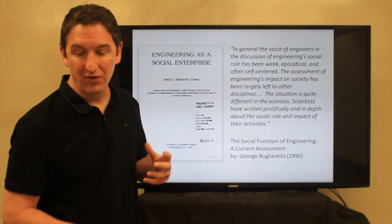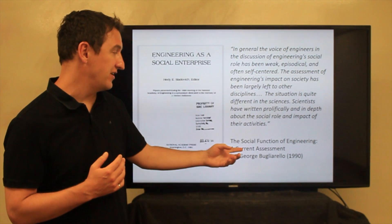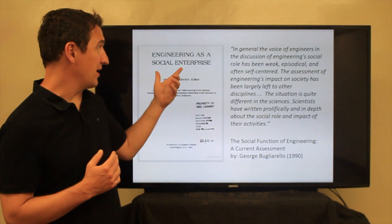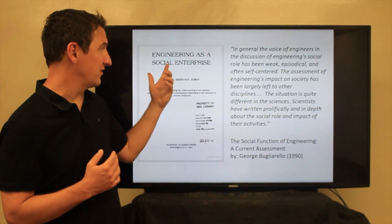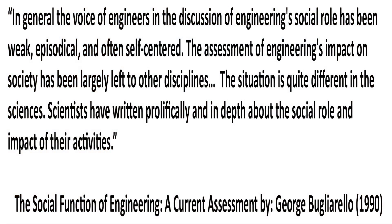When we actually go back and look at some of past literature, for example, this was a paper on the social function of engineering, a current assessment that appeared in a journal called Engineering as a Social Enterprise back in the early 1990s. And in it, one of the quotes was, in general, the voice of engineers in the discussion of engineering's social role has been weak, episodical, and often self-centered. The assessment of engineering's impact in society has largely been left to others. The situation is quite different in the sciences. Scientists have written prolifically and in depth about the social role and impact of their activities.